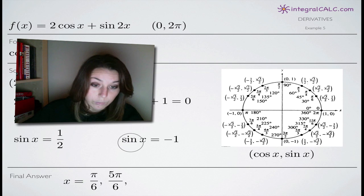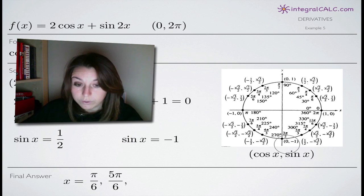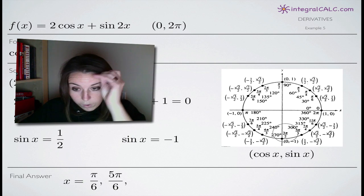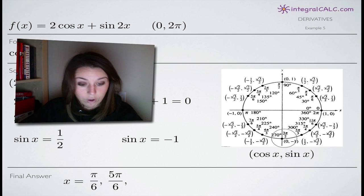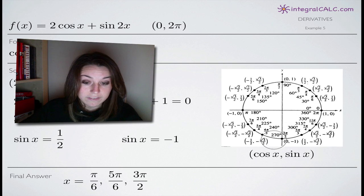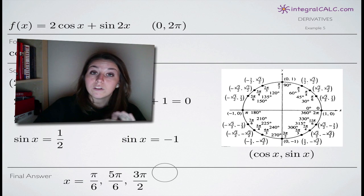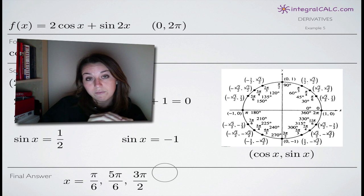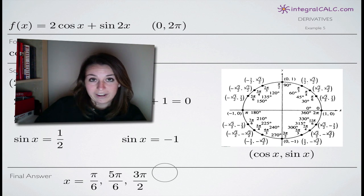Now we need to find out where sine of x equals negative 1. If we look, we can see that the only place where sine of x equals negative 1 is down here at the coordinate (0, negative 1), where the radian coordinate is 3 pi over 2. That is the third solution to our problem. We have these three solutions, and those are the points along the graph at which the derivative is a horizontal line, or the slope of the graph is 0.